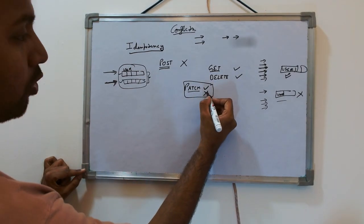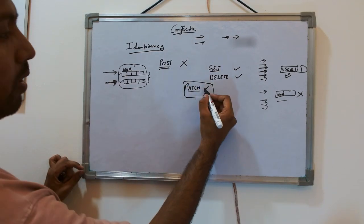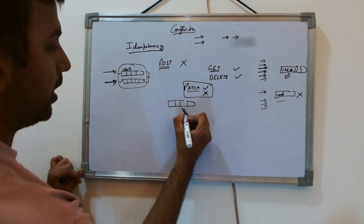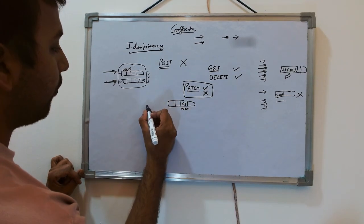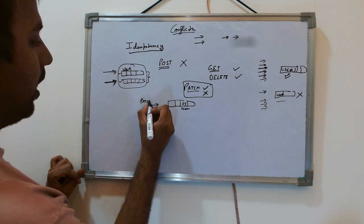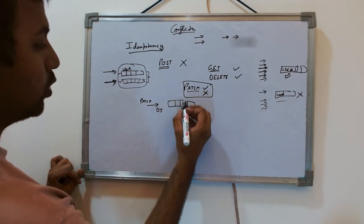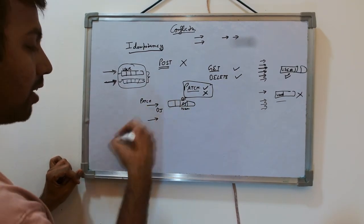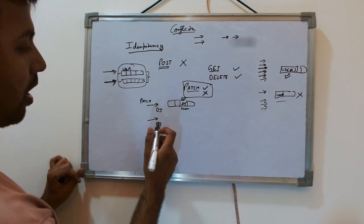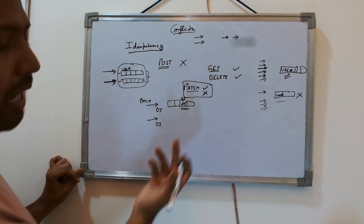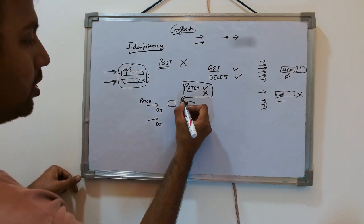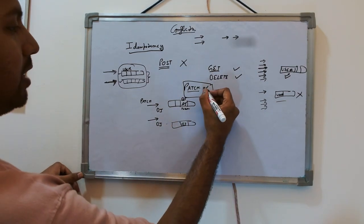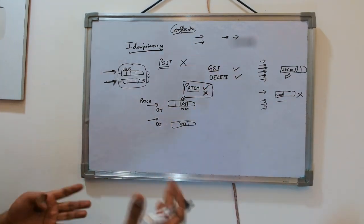PATCH might or might not be idempotent depending on how you design it. For example, if your PATCH call is updating a name — say 'sj' — and the first request updates it to 'dj', then a parallel or sequential duplicate call also tries to update the name to 'dj'. There is no impact since the name is already 'dj', so in this case it is idempotent.